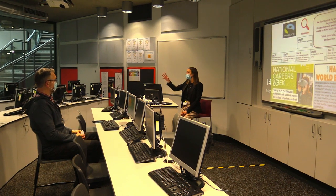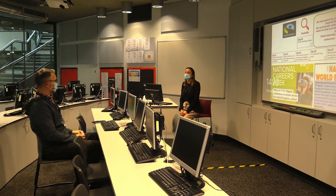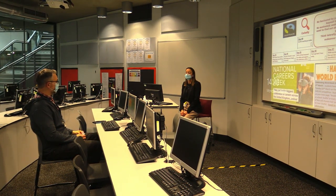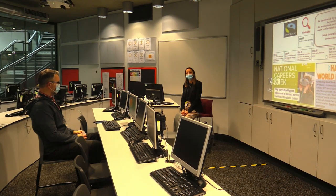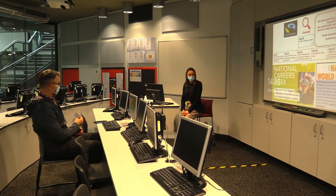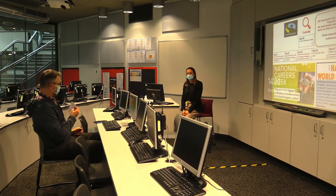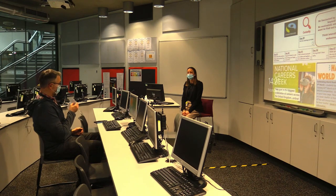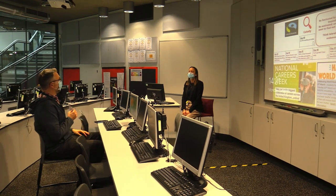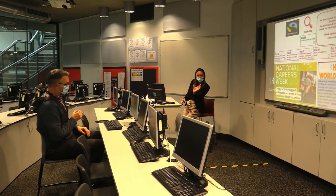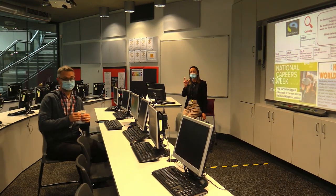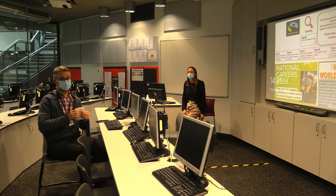Now that everybody's finished inputting all their information, we're going to go to the sports hall, but we need to do it in alphabetical order because we need to check the consent as soon as we've got to the sports hall. Also remember your card and your spare barcodes.